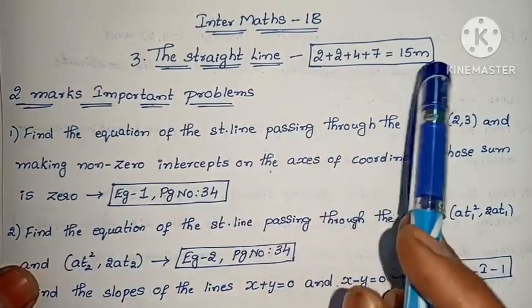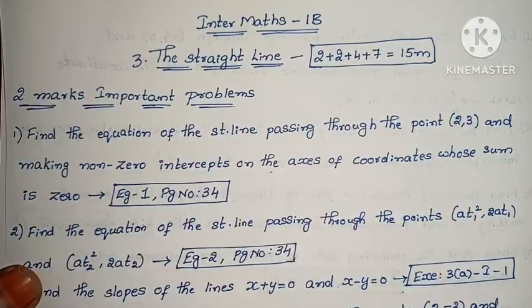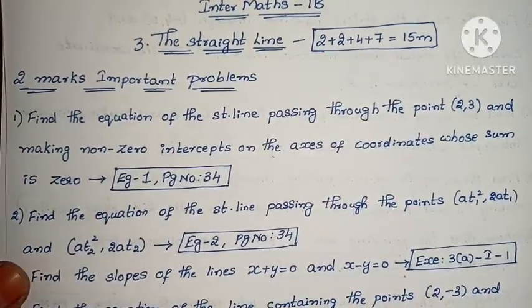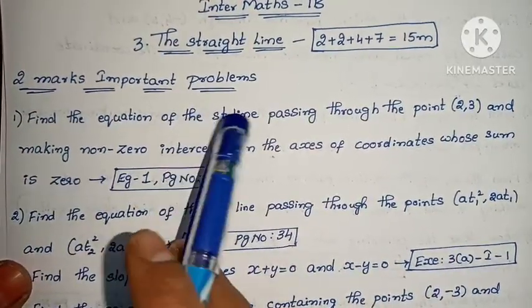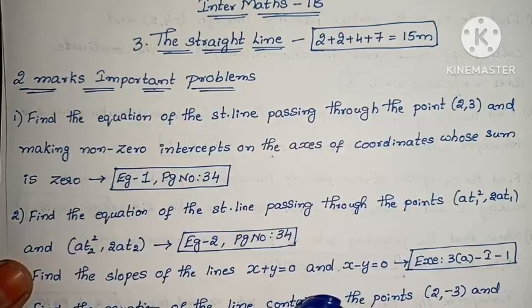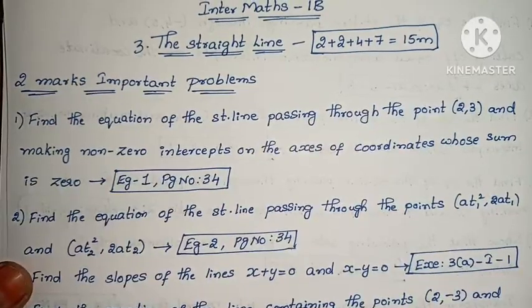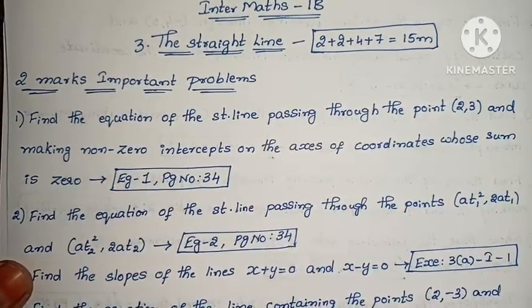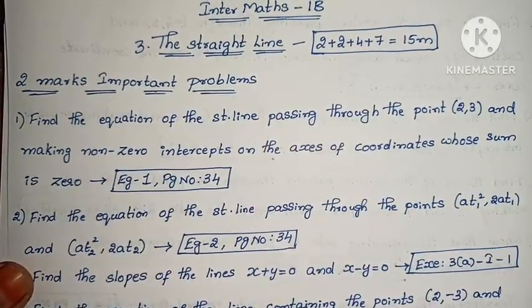This chapter has a total of 15 marks. First, we have 2 marks of important problems. We have already explained the solutions in this chapter. Please check the link in the description below.